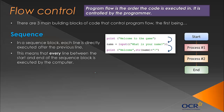Pseudocode — as I discussed a couple of videos ago — doesn't have one strict format. A simple example: number equals 10, then add 5 to num, then output num. If we converted this to program code, we would get 15. So that's just a basic pseudocode representation of a sequence block.